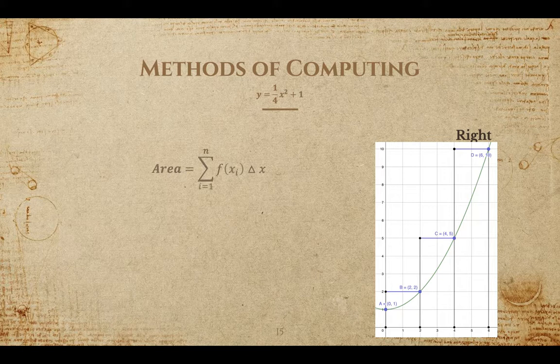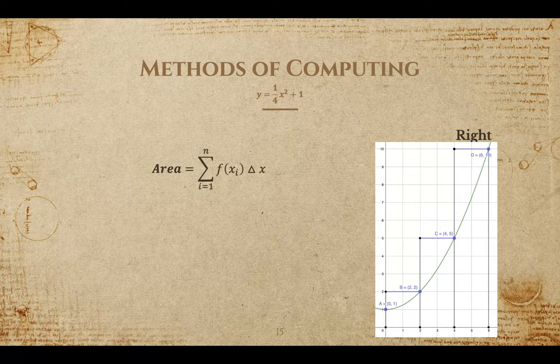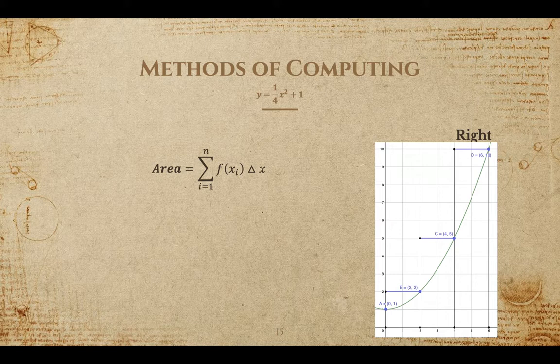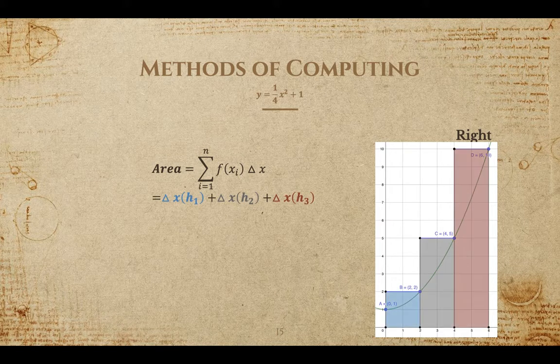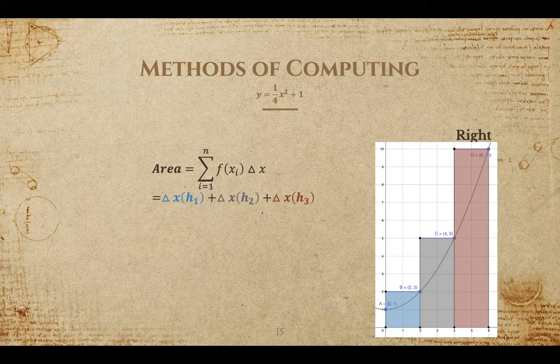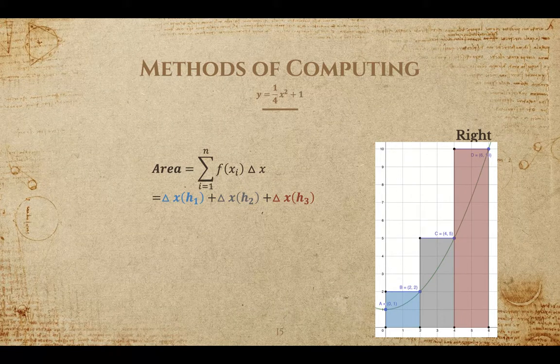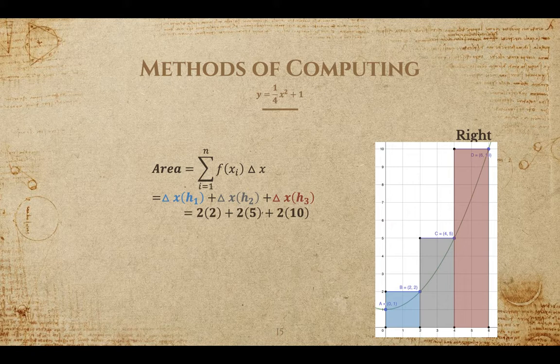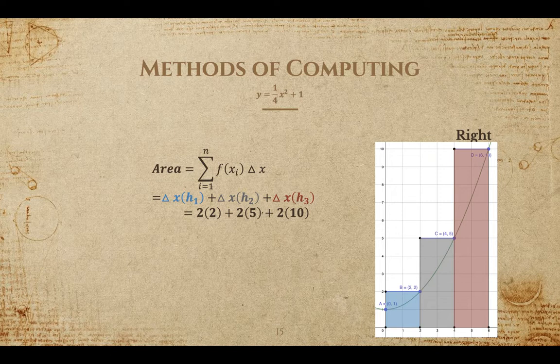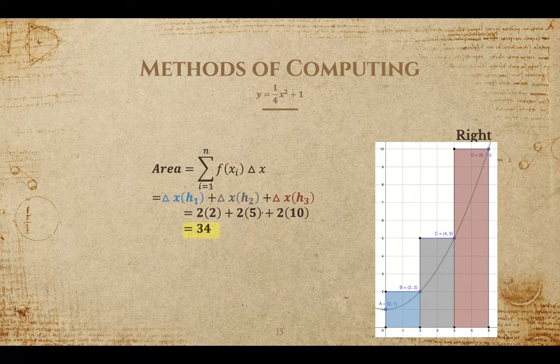For right endpoints, you can see that there's a slight difference in the summation formula. We'll be using i equals 1 to n in this case. However, finding the areas is not different at all from the left endpoint method. Our areas are 4, 10, and 20, respectively, for a total approximation of 34 units squared.